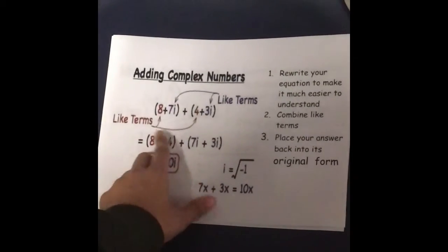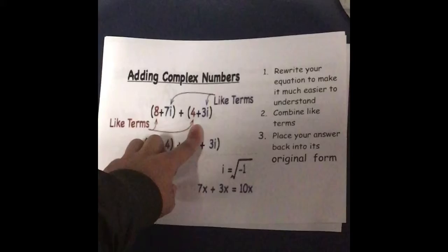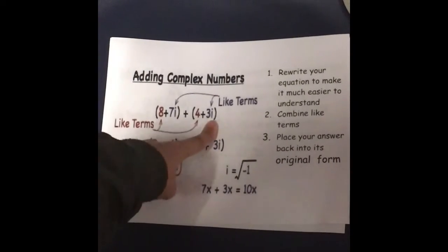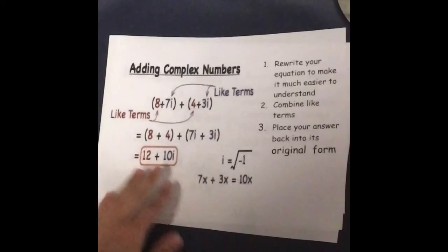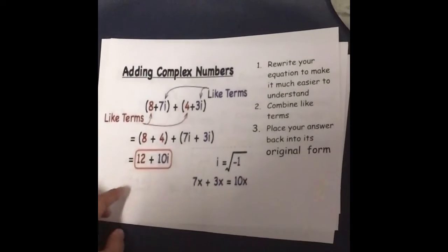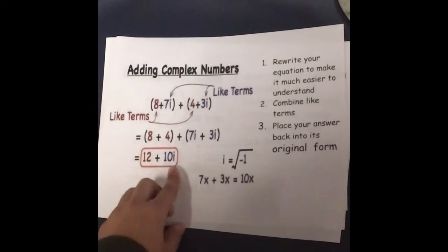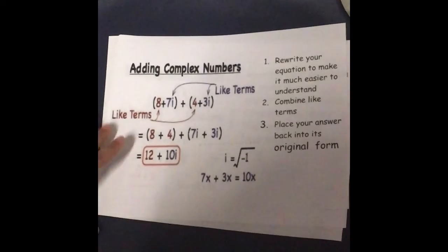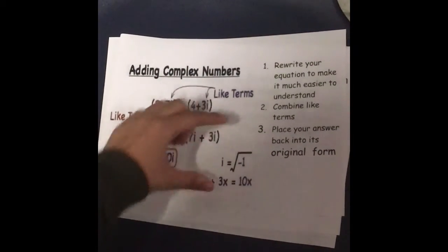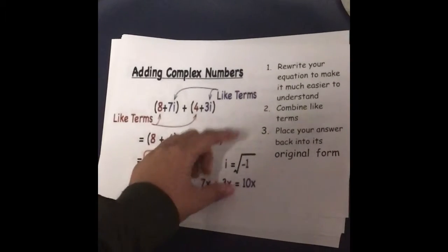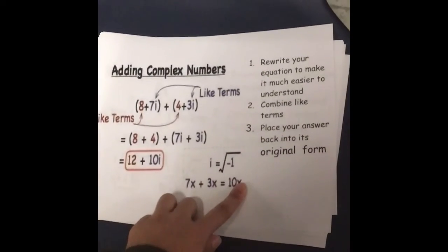As you can see, these are your like terms: 8 and 4, 7i and 3i. You add 8 and 4 and you get 12. You add 7i and 3i and you get 10i. Here's the example in form with i. i equals negative 1.